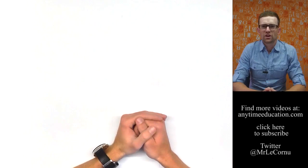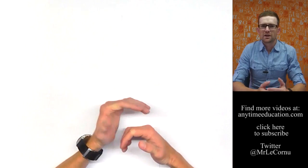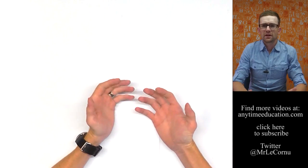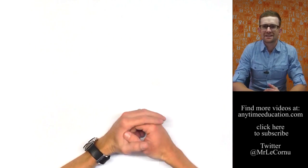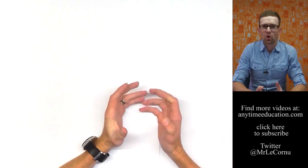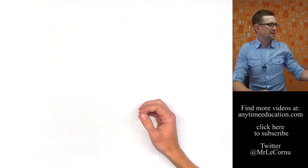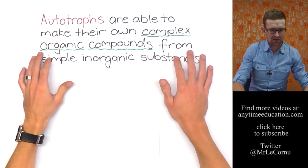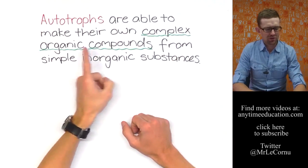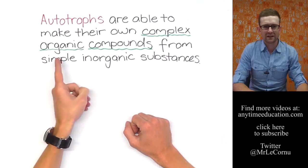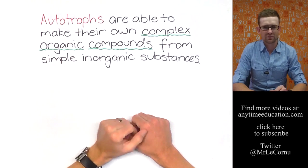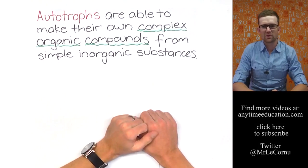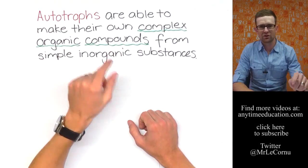So in the food chains video we talked about autotrophs and heterotrophs and we learnt why really the Sun is the main source of energy for all life. Let's recap those terms though. Autotrophs are organisms that are able to make their own complex organic compounds from simple inorganic substances. Really what we're talking about there is they make their own glucose.